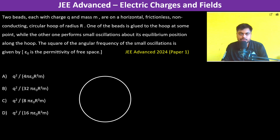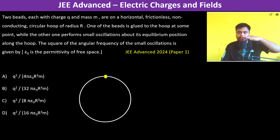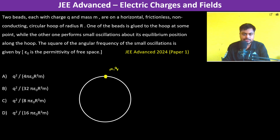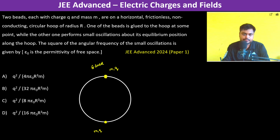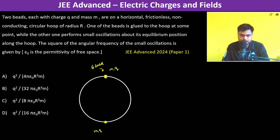Two beads, each with charge Q and mass M, are on a horizontal frictionless non-conducting circular hoop of radius R. Since the hoop is horizontal, gravity MG is not taken into consideration — it's like on a table. One of the beads is glued to the hoop, while the other performs small oscillations about its equilibrium position.